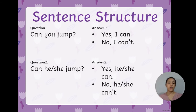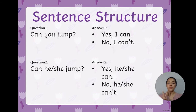For sentence structure, I have two questions. Number one: Can you jump? You should answer: yes, I can. Or, no, I can't. Question number two: Can he or she jump? You can answer: yes, he can. Or, yes, she can. You can also answer: no, he can't. Or, no, she can't.